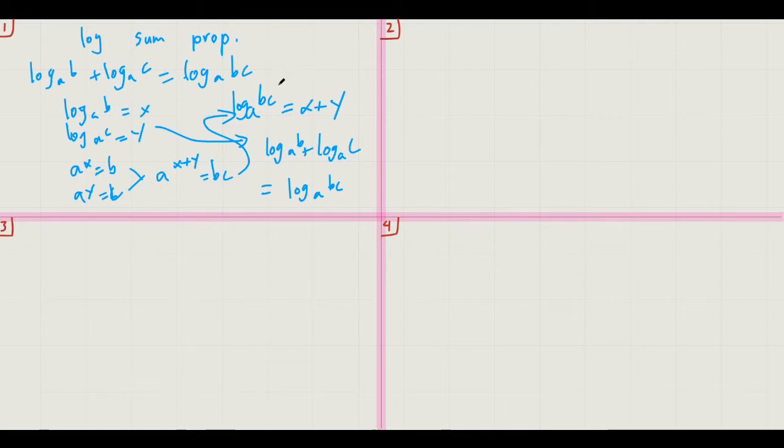And we're going to have Daniel do the next property. Right. So the next property is the, similarly, the logarithm difference property. And it's proved in a similar way. So we have the logarithm diff, for short, property. So this states that log base a b minus log base a of c equals log base a of b over c.